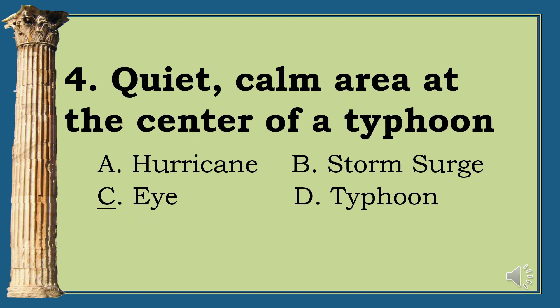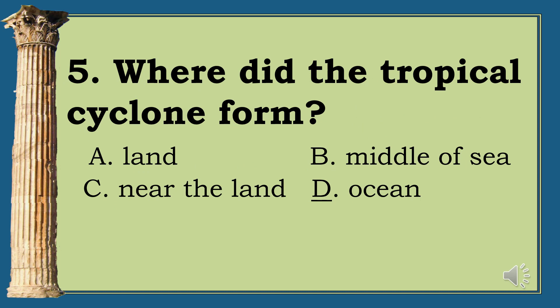Question 5: Where did the tropical cyclone form? A. Land. B. Middle of a continent. C. Near the land. D. Ocean. The correct answer is letter D, Ocean.